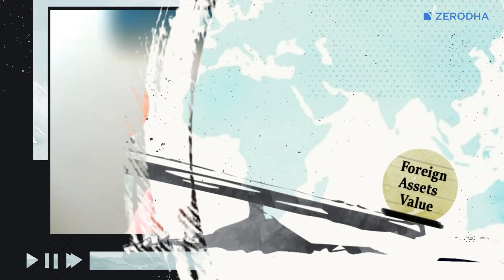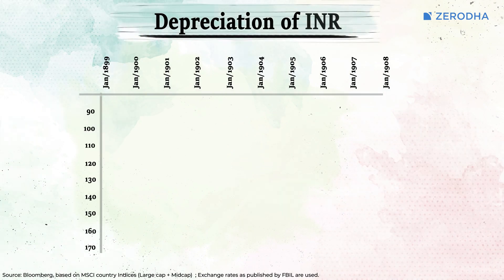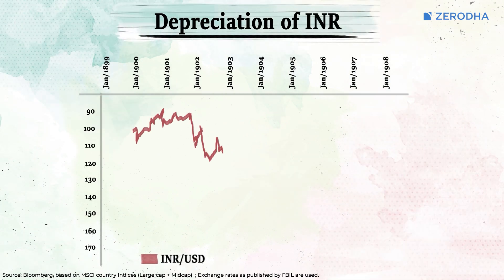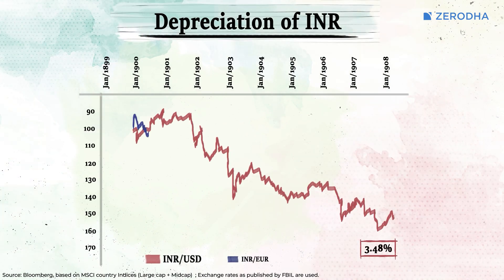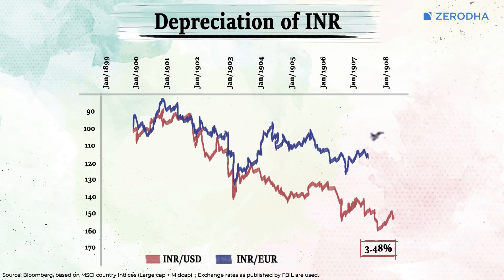As we know, the Indian rupee depreciates against the developed currencies of developed countries. This is because in developed countries, the inflation rate is lower than in India, which has historically led to rupee depreciation.